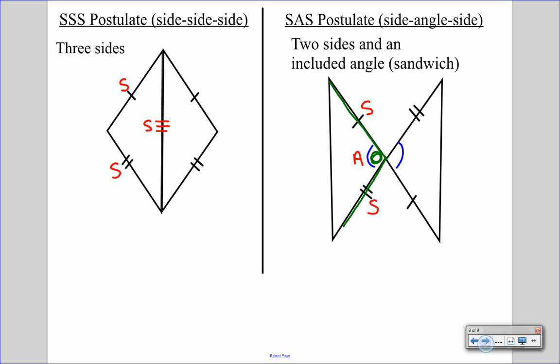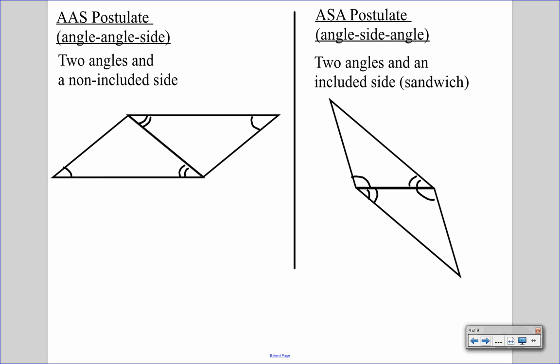This next one is AAS — angle, angle, side — where we have two angles and a non-included side. We have one set of congruent angles, a second set of congruent angles, and a shared side so we can draw that congruency mark in. If you connect the two angles, you notice the side is not sandwiched between them but off to the side — that's why it's angle, angle, side. The side is beside them, not in between.